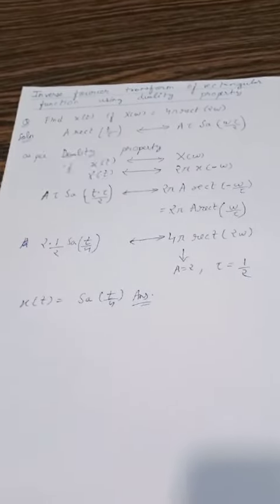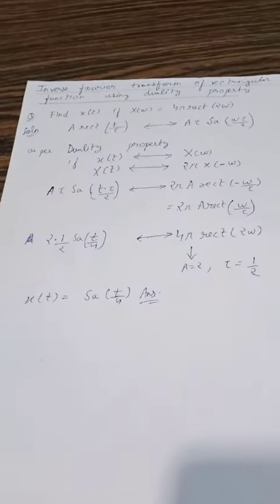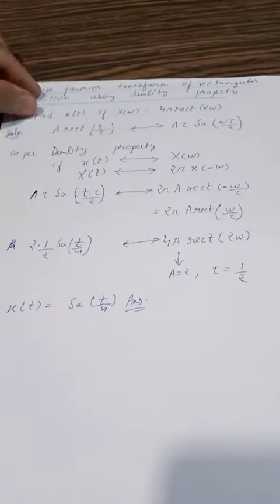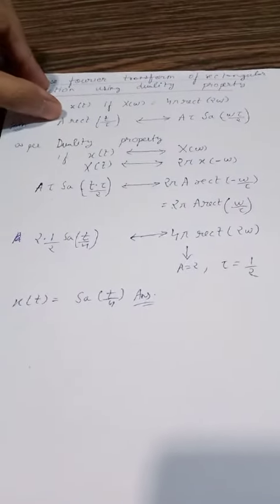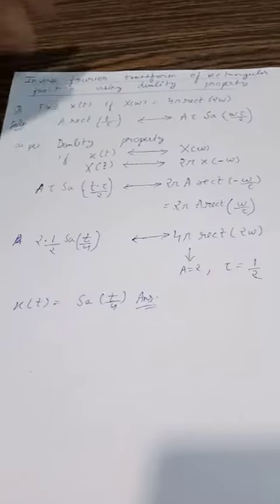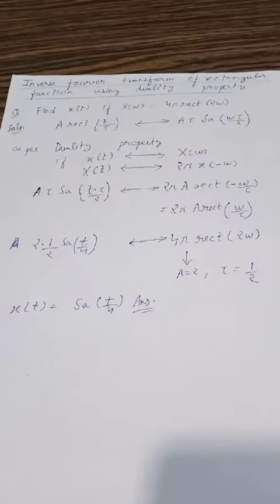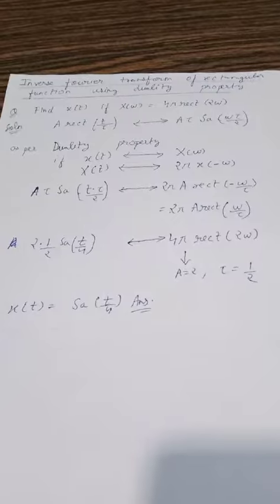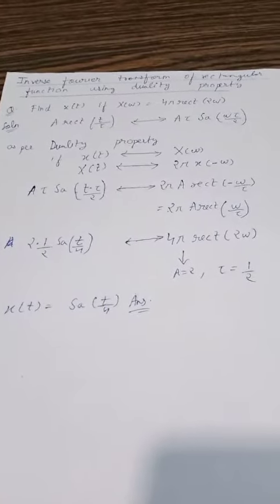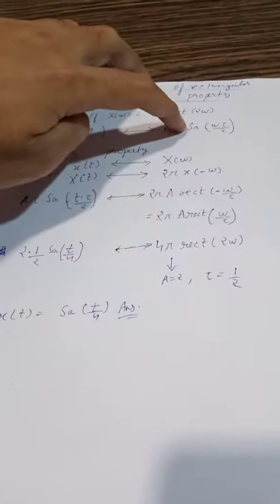We need to find the inverse Fourier transform of this rectangular function. We know that the Fourier transform of a rectangular function is given by the formula: a·rect(t/τ) has Fourier transform a·τ·Sa(ωτ/2), where Sa is the sampling function.